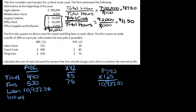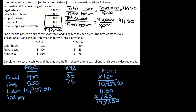Now for indirect costs, that's $11.50 per hour times 125 hours — so 11.50 times 125 equals $1,437.50. If we add up all our costs, the total cost of that job is $13,395.